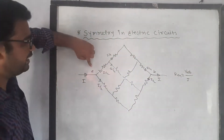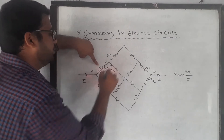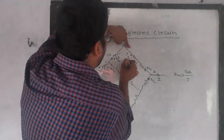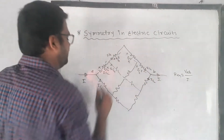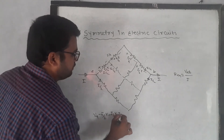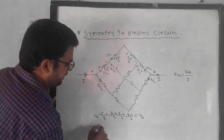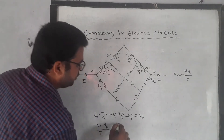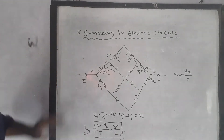Applying Kirchhoff's voltage law from A to B: V_A − (I/2)×R − (I/4)×R − (I/2)×R = V_B. Therefore V_A − V_B = (I/2 + I/4 + I/2)×R = (5/4)IR... computing carefully: (I/2)R + (I/4)R + (I/2)R = (5R/4)I, divided by total current I gives R_eq = 3R/2. So the equivalent resistance of the circuit is 3R/2.